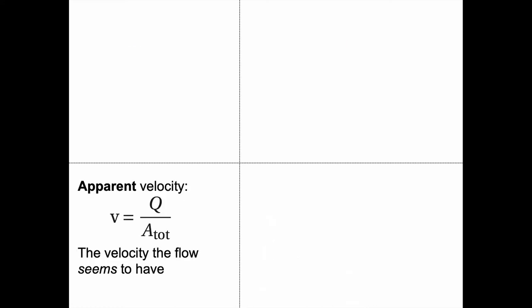We need to think of velocity more carefully. There is an apparent velocity through a porous media, which is simply the flux in cubic meters per time unit divided by the area—the velocity that the flow seems to have.